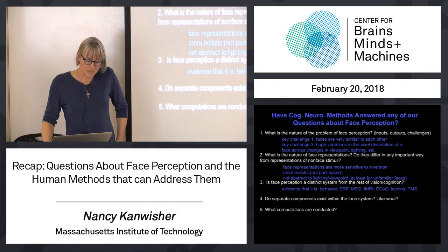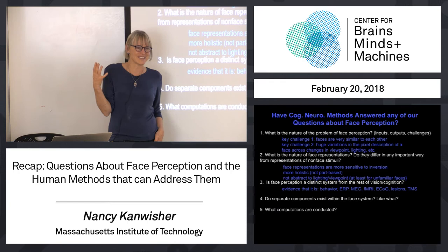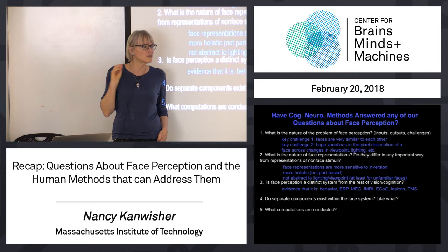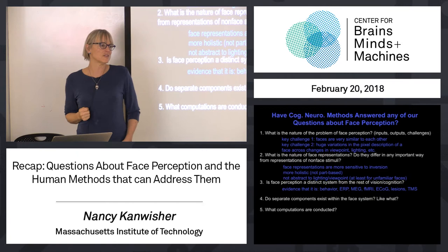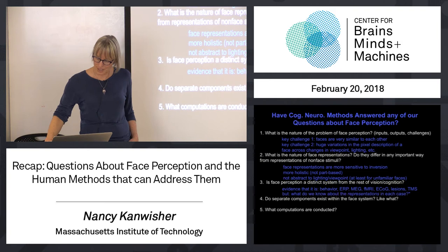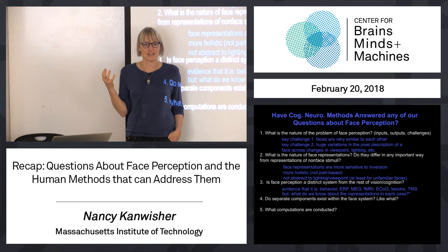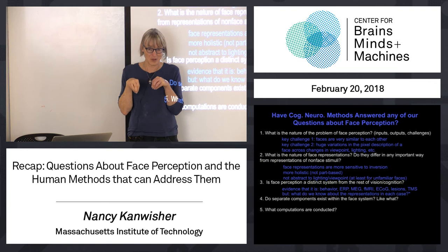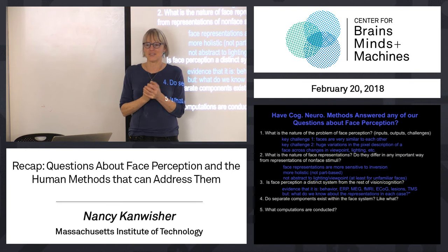Every bit of evidence I presented showed that the face recognition system is different in the brain from the object recognition system. Different neural structures are involved — that's why you get different ERP and MEG responses, different functional MRI responses, and double dissociations in the patient literature. The methods in human cognitive neuroscience are great for saying this system is different from that system. That's good and worth knowing, but it's kind of rudimentary. We really want to know more about how the face recognition system works, and so far we have a few little clues, but it's sort of weak.